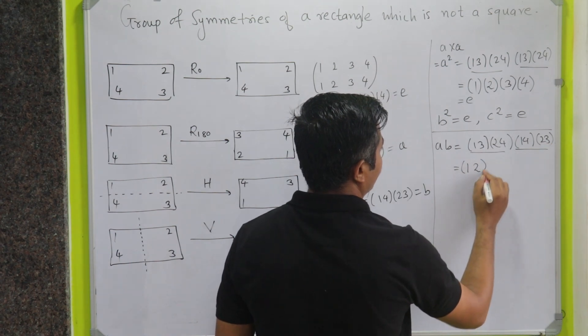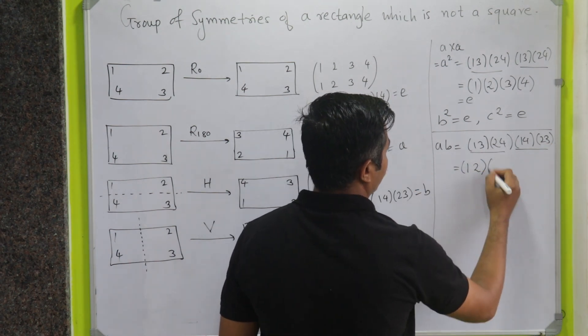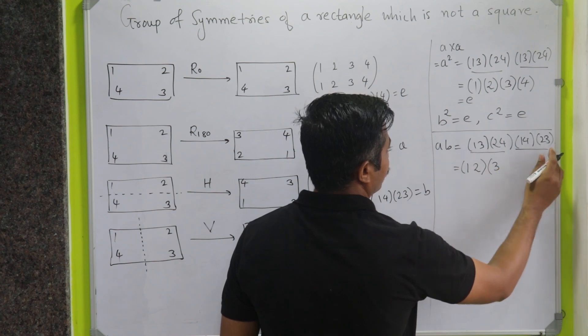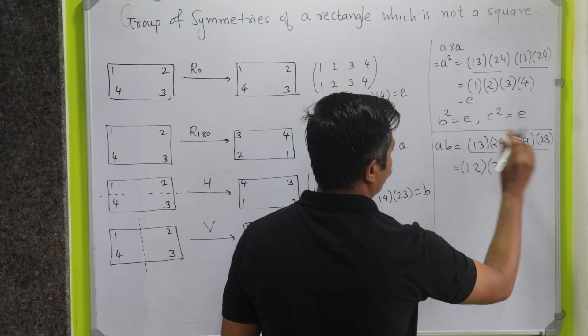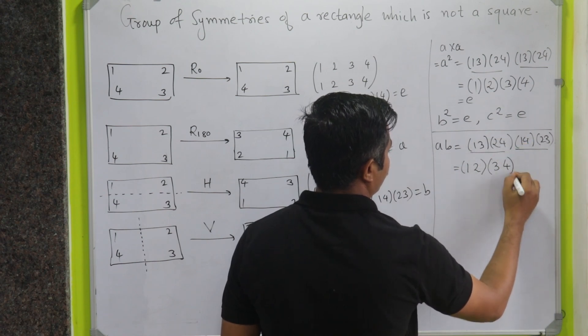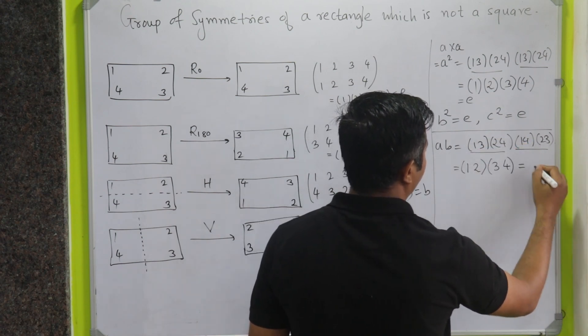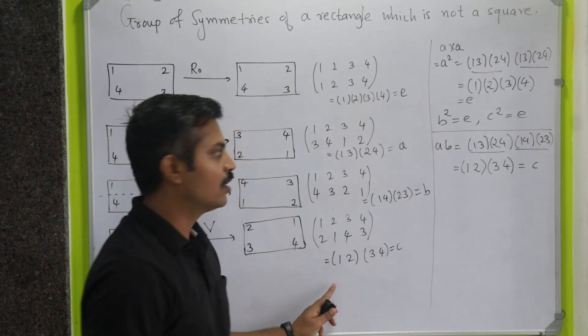Now we will map to 3, 3 maps to 2, 2 maps to 4, so image of 3 is 4. 4 maps to 1, 1 maps to 3, so cycle closes. So if you observe properly, this is actually nothing but C.